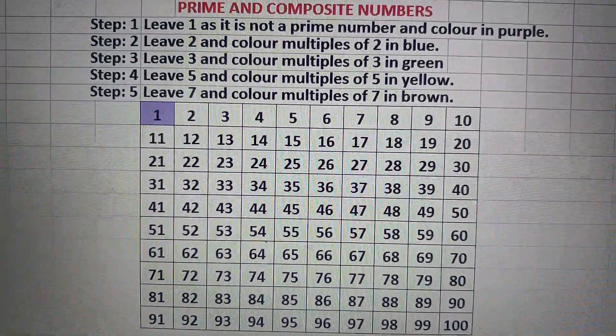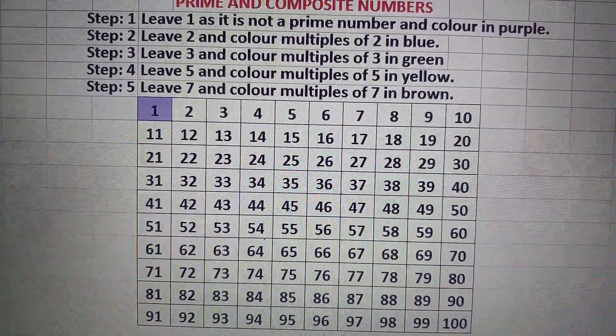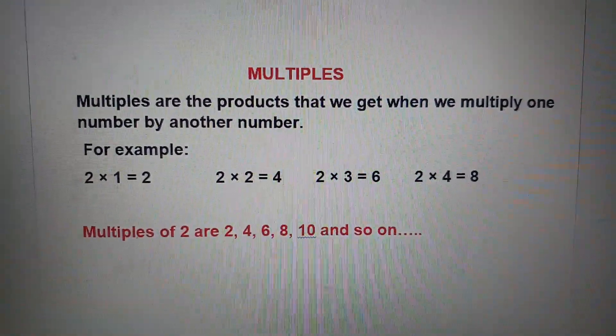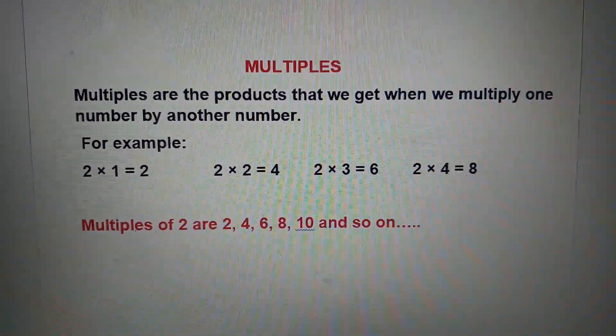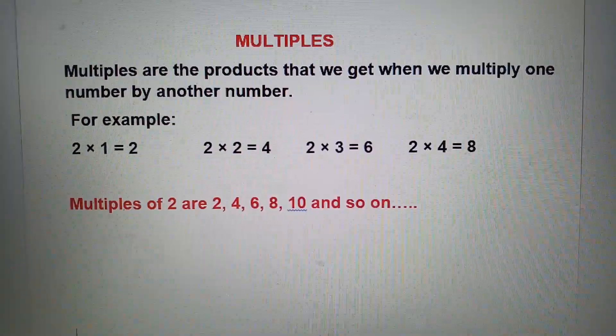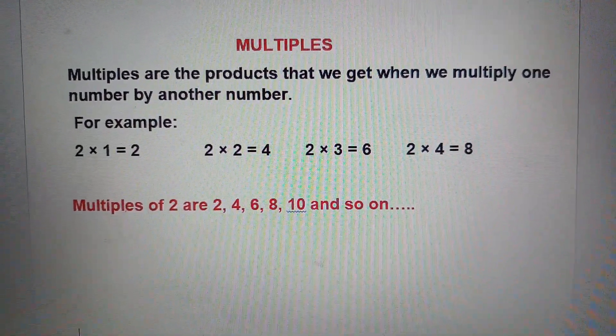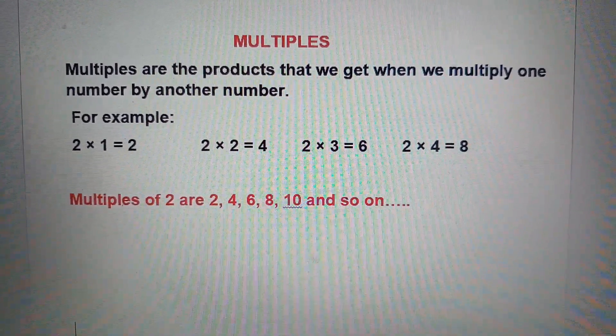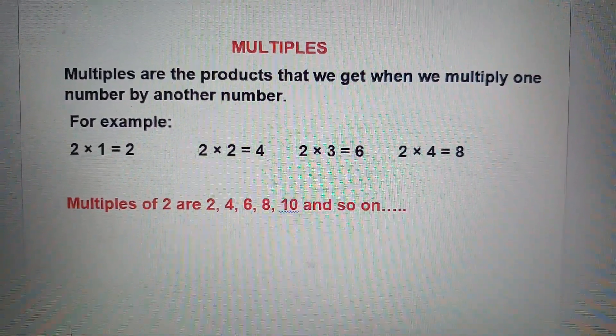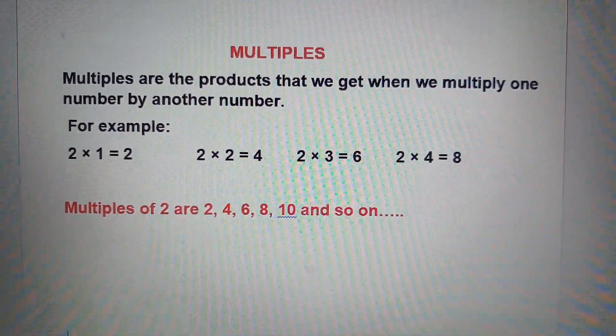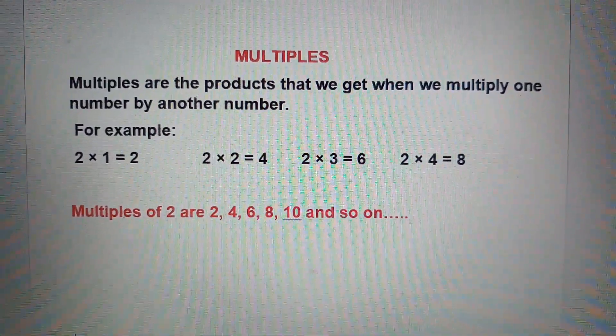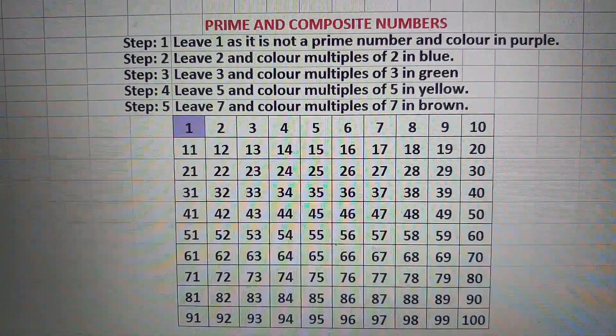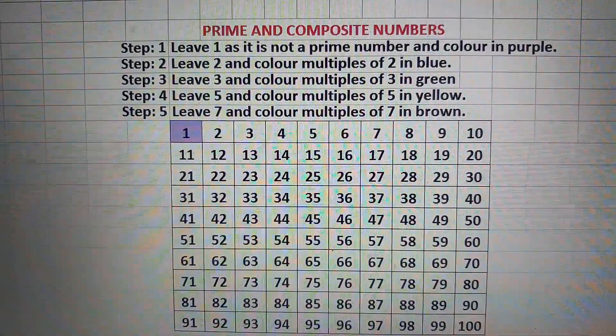Step 2: leave 2 and color multiples of 2 in blue. Now we will learn what are multiples. Multiples are the products that we get when we multiply one number by another number. For example, 2 multiplied by 1 is 2, 2 multiplied by 2 is 4, 2 multiplied by 3 is 6, 2 multiplied by 4 is 8. Therefore we can say that multiples of 2 are 2, 4, 6, 8, 10, etc. Or you can say multiples are like tables. We know that 2 is an even number. Therefore all multiples of 2 will be even numbers.